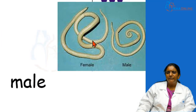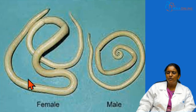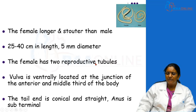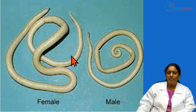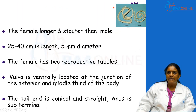The female is longer and stouter — 25 to 40 centimeters in length and 5 mm in diameter — and there are two reproductive tubules inside the female, whereas the male has only one. The openings of the reproductive system and the alimentary canal are separate in the female. The reproductive system opening is called the vulva and is located ventrally at the junction of the anterior and middle third of the body. The tail end is straight. In the male it is curved, and at the tail end there is only the anus, which is subterminal — just a little bit away from the end. So the female has separate openings for the reproductive and alimentary canal, whereas in the male it is a common opening.